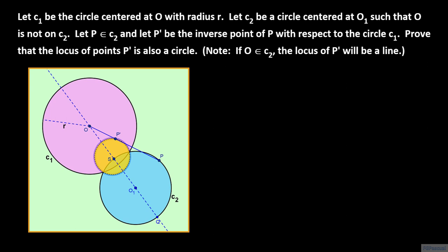If the two circles are concentric, then the points of intersection Q and S will be equidistant to O and the proof will still work. We now construct the inversions of Q and S. Let the inversions of Q and S be Q prime and S prime respectively. The key to our proof is showing that angle Q prime P prime S prime is a right angle.